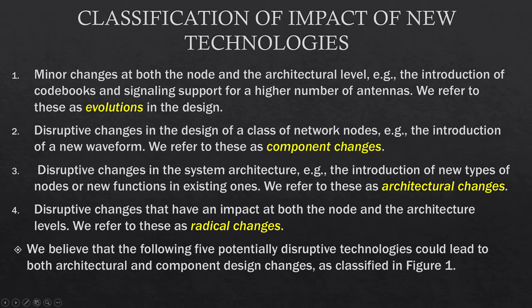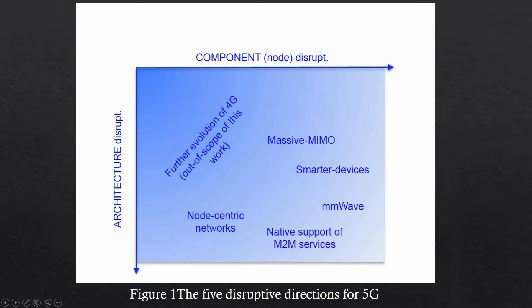Third, disruptive changes in the system architecture — for example, the introduction of new types of nodes or new functions in existing ones — we refer to these as architectural changes. Fourth, distributed changes that have an impact at both the node and the architecture levels — we refer to these as radical changes. We believe that the following 5 potentially disruptive technologies could lead to both architectural and component design changes, as classified in figure 1. The y-axis shows architectural disruption and the x-axis shows component disruption, with different technologies such as node-centric networks, massive MIMO, smart devices, millimeter wave and native support for M2M services shown on these scales.